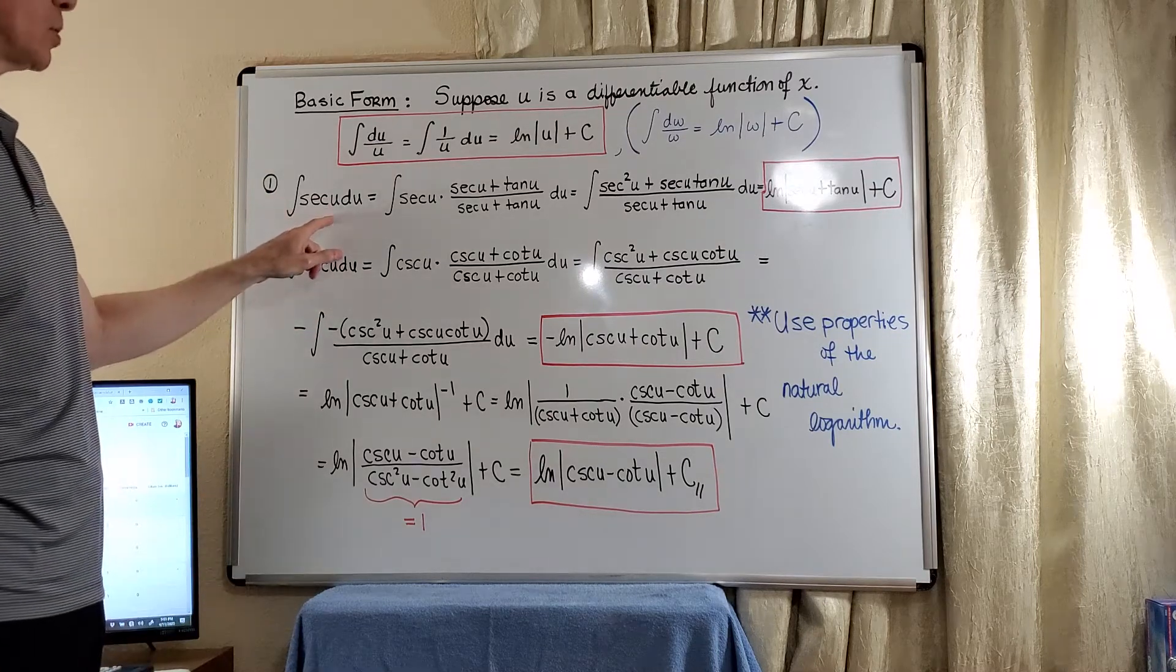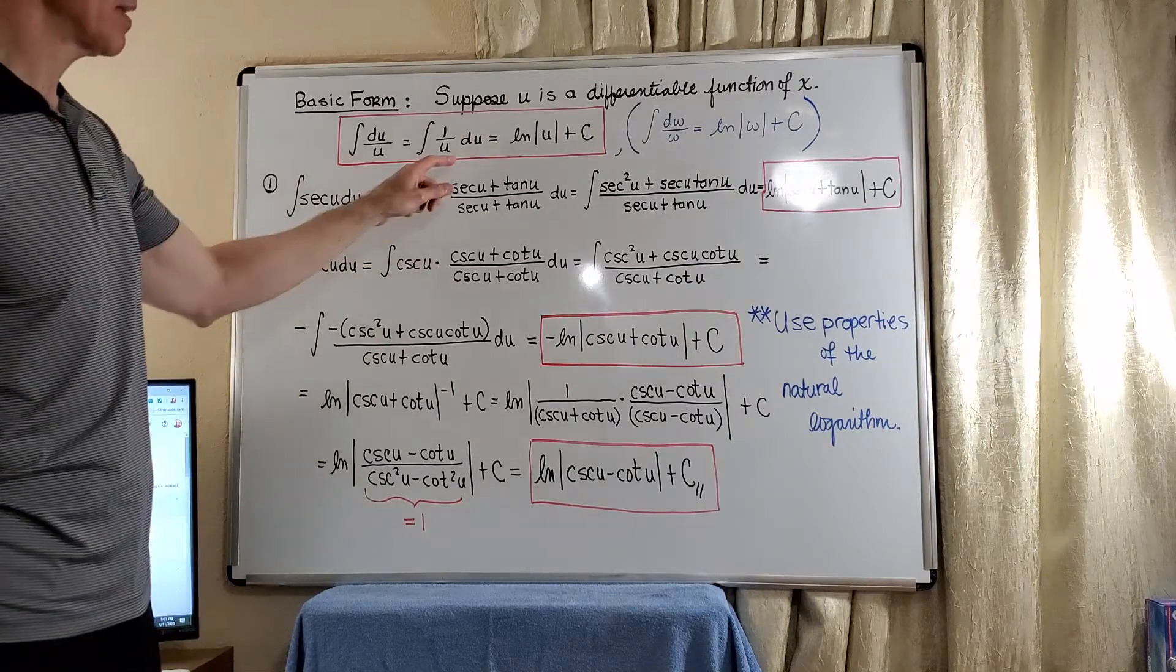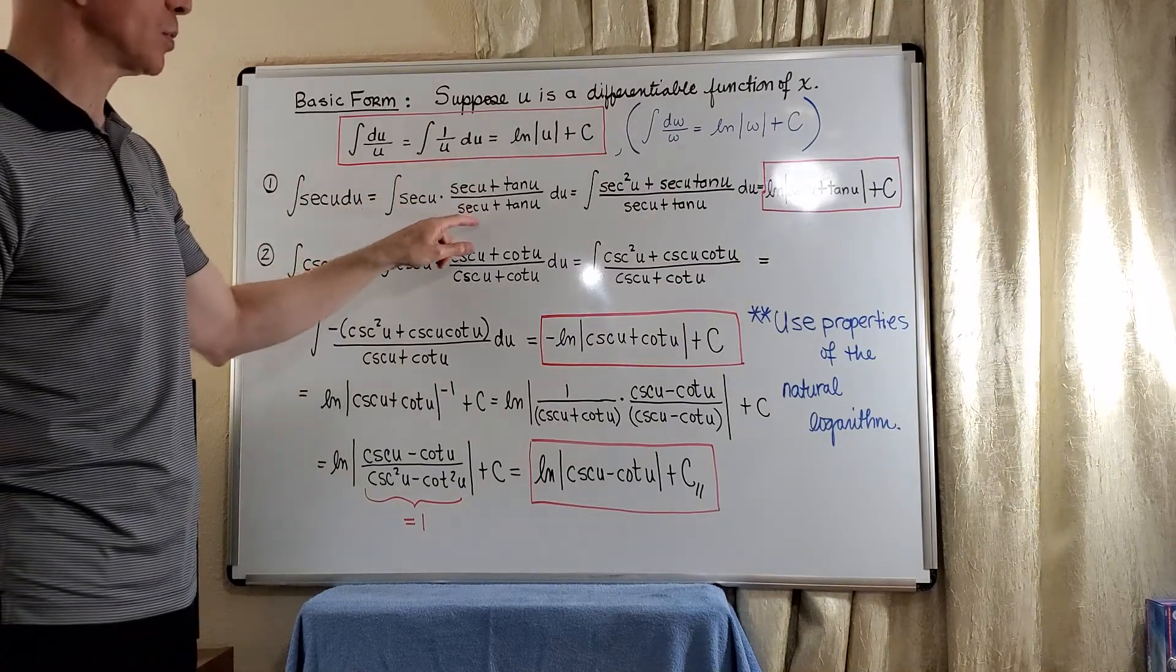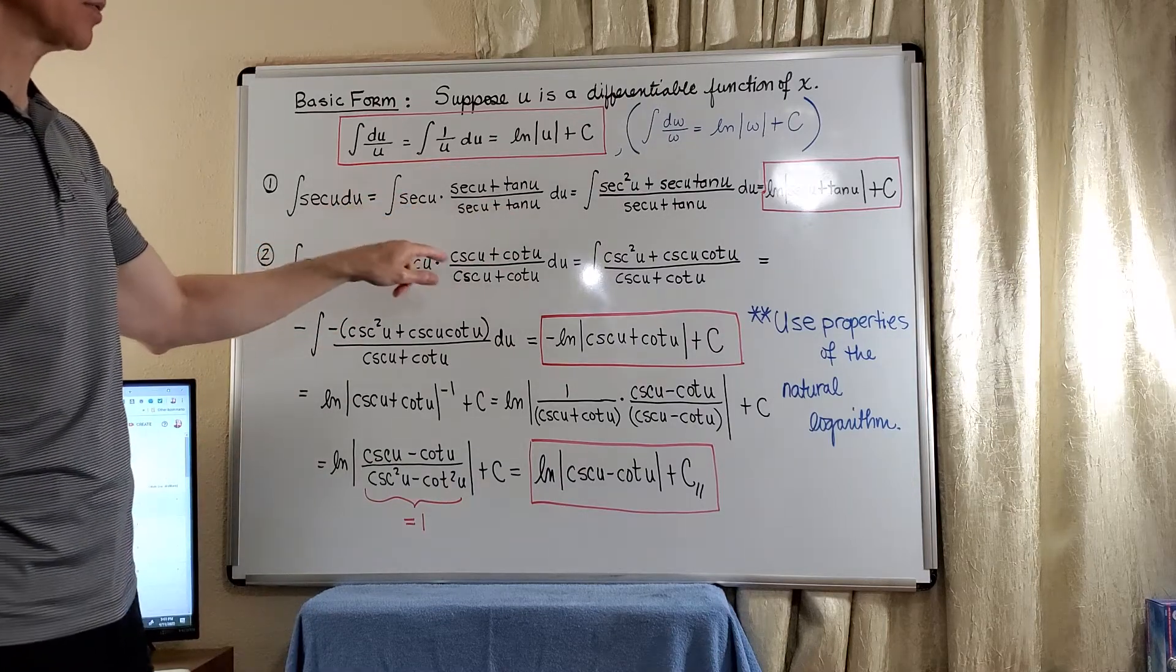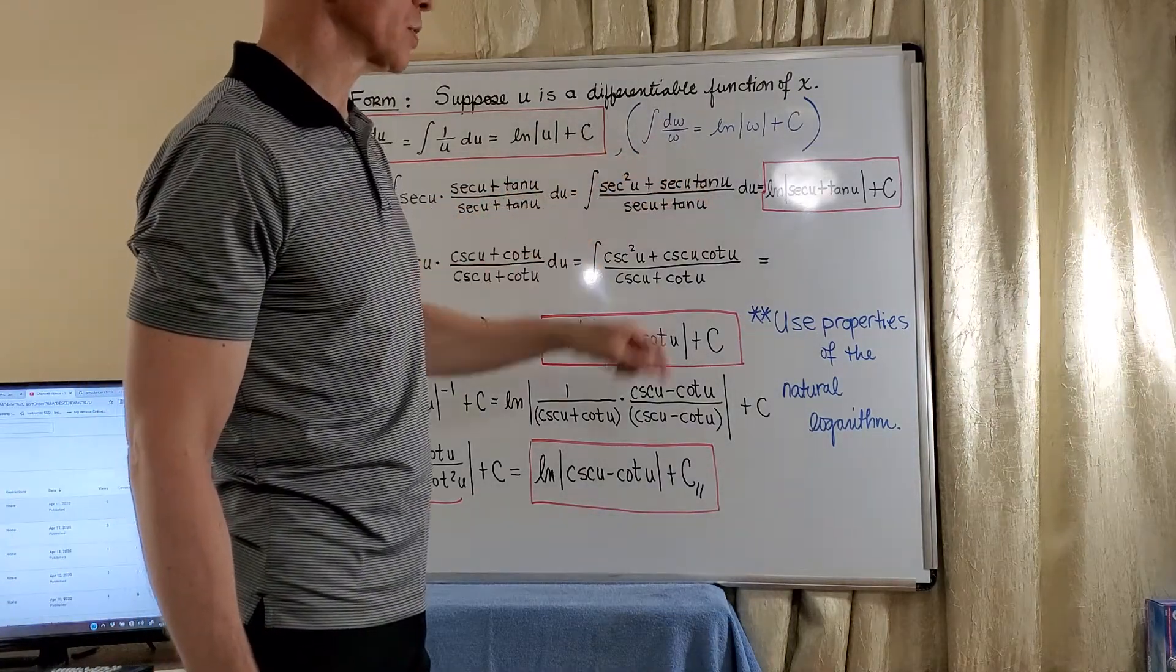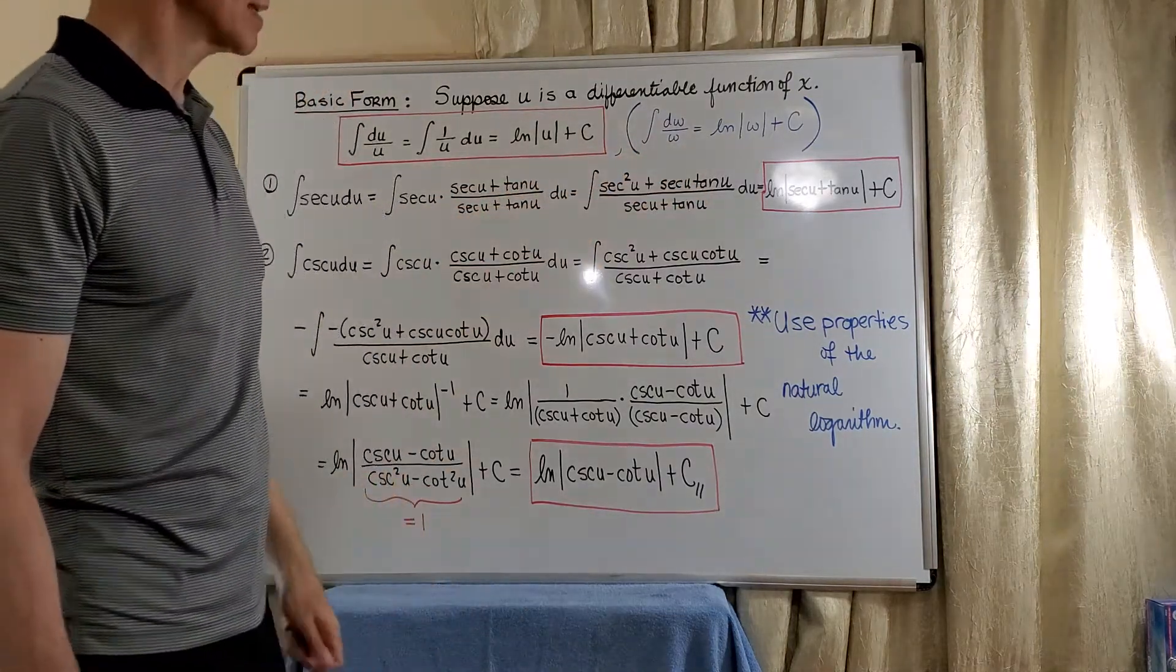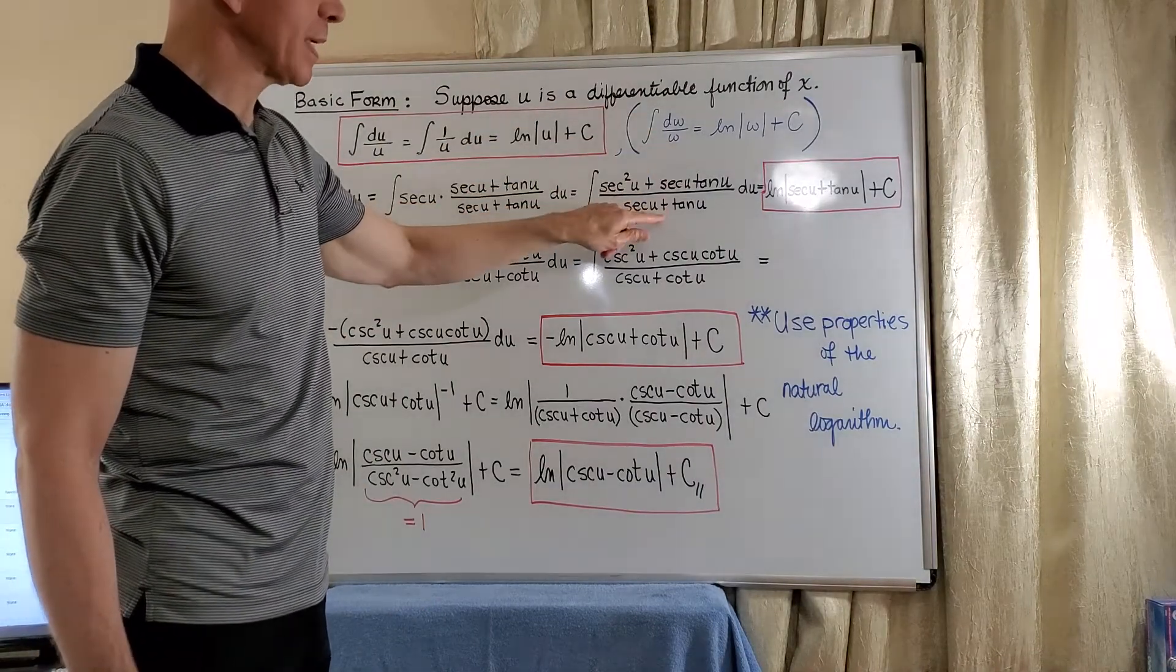Now for secant u du, we simply multiply by a convenient one. That is secant u plus tangent u divided by secant u plus tangent u. And then we just distribute the secant u to get the secant squared plus secant u tangent u. And now, downstairs, we have the w, so to speak. And upstairs, we have the differential.